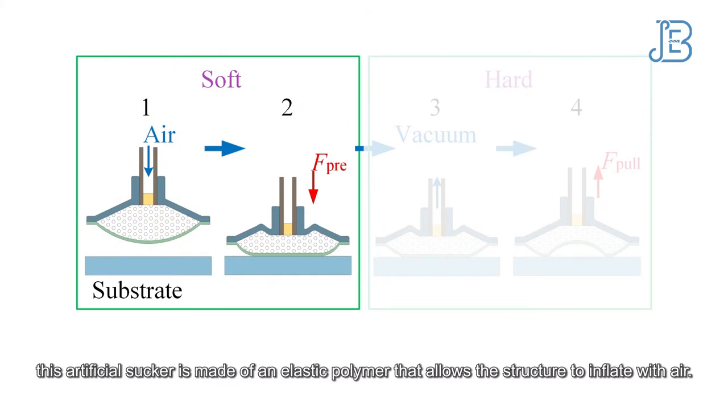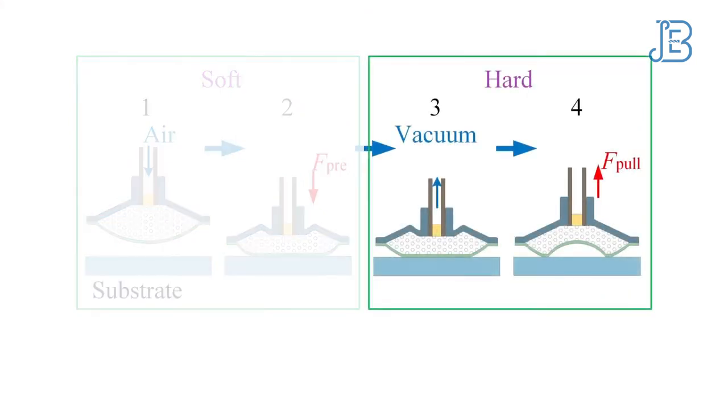this artificial sucker is made of an elastic polymer that allows the structure to inflate with air. Upon contact, the sucker deflates and creates a suction cavity that keeps tight until the sucker is re-inflated.